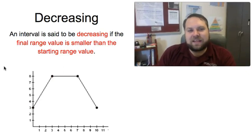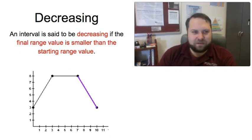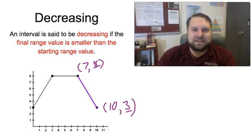An interval is decreasing if the final range value is smaller than the starting range value. Let's look now at this purple interval and we can look at our starting and ending points. We start at the point (7,8) and we end up at the point (10,3). To determine if this is decreasing, I'm only looking at the range values, and going from left to right I started at 8 and I finished at 3, so my range value decreased. So I would say that this interval is decreasing.